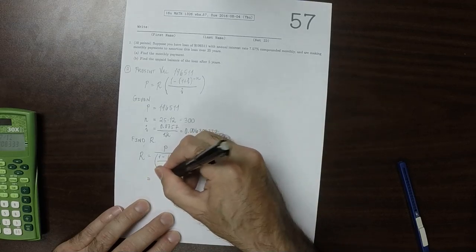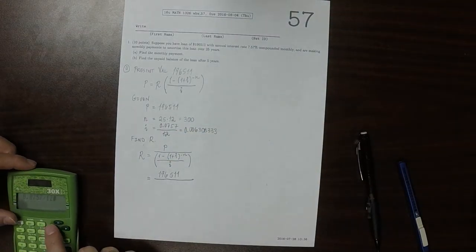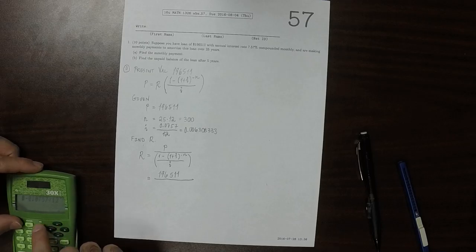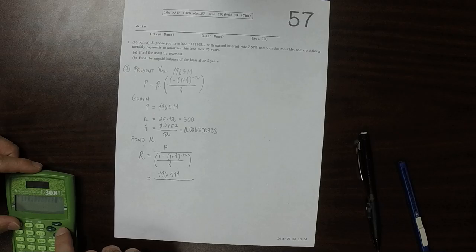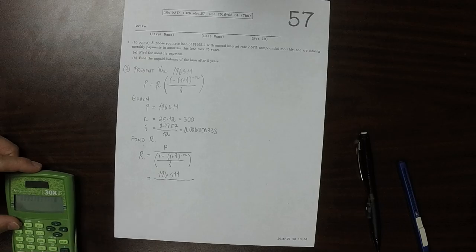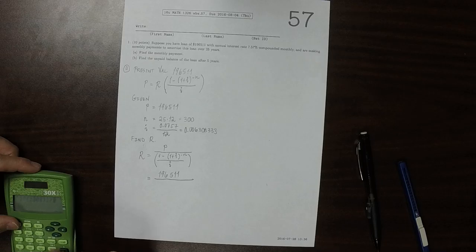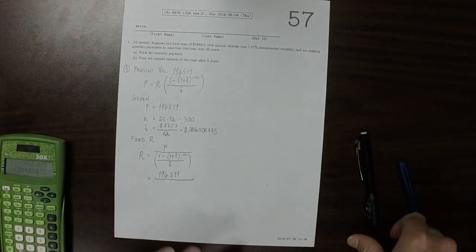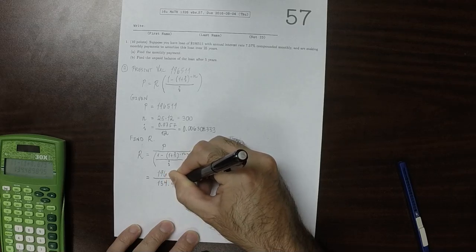So that would be 196,511 divided by, now I'll evaluate that expression. So 1 minus 1 plus i raised to negative 300, divided by i, so that's 134.489875.